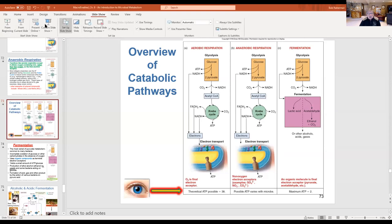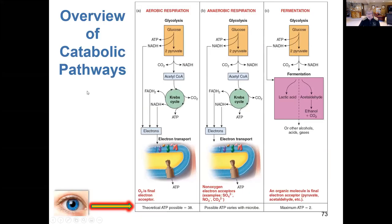Okay, guys, all we have is one last section of Chapter 8 to talk about. I'd like to begin with a brief review of what we've been talking about in the previous lecture. That was the fact that when we look at catabolism in cells, we're describing three basic mechanisms or processes: aerobic, anaerobic, and finally fermentation.